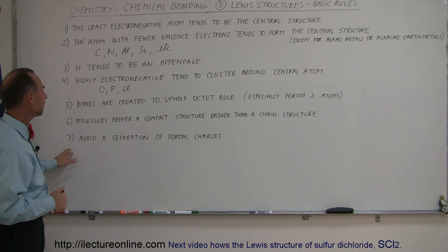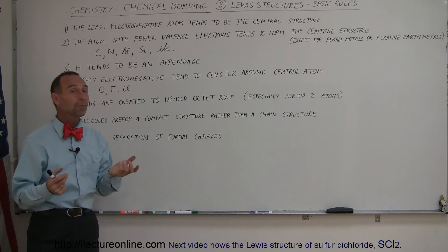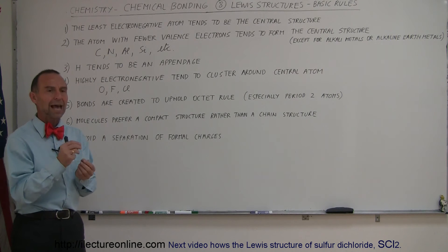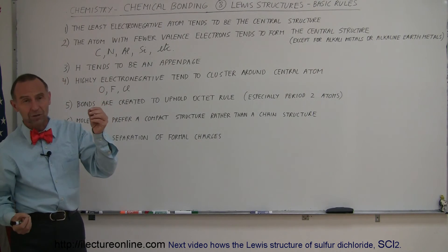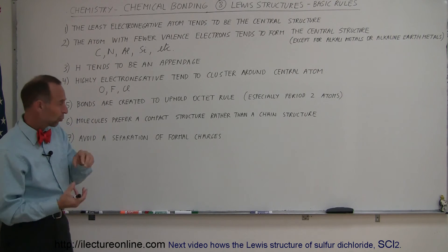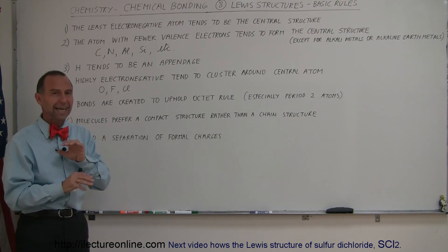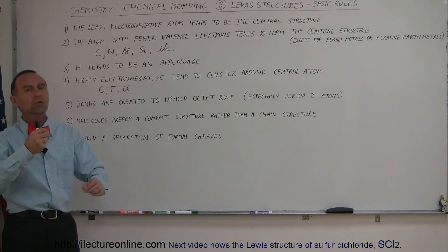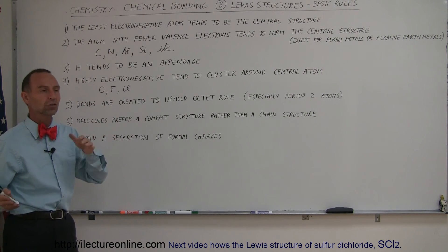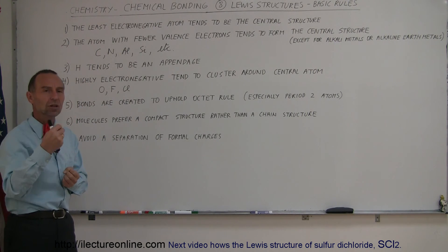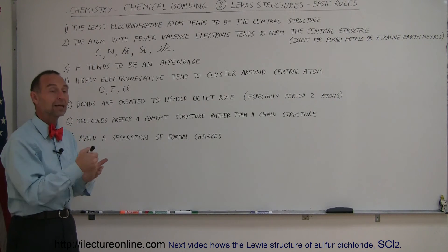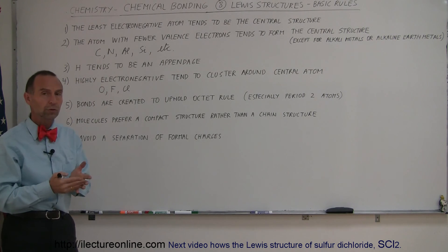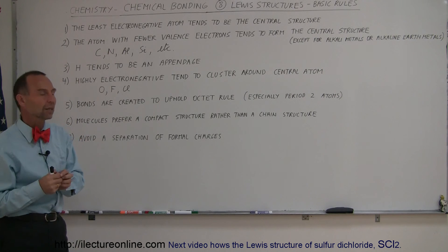Rule number seven: avoid the separation of formal charges. Sometimes a double bond or triple bond is created because without it, you would have one atom with a negative charge and another atom on the other side of the molecule with a positive charge — what we call the separation of formal charges. That's not a preferred methodology. Atoms tend to move those charges so there's no separation, usually accomplished by taking additional electrons into a bond structure and making a double bond instead of a single bond, even though technically both types of bonding can exist following Lewis structure rules.